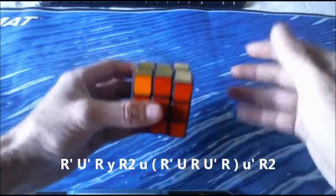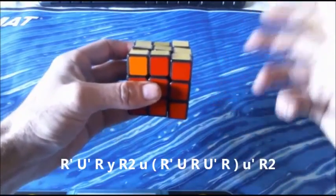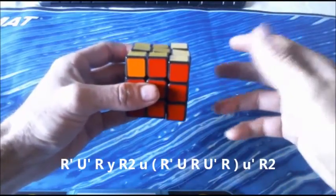Exactly the same, and all the G perms are the same. R2 U leading in, R U R U R, small U R2 leading out.